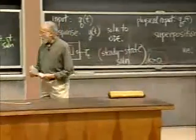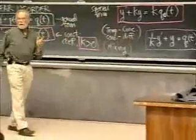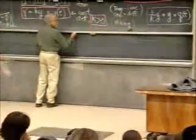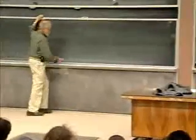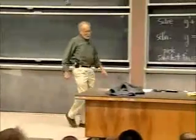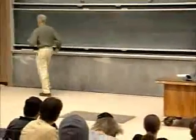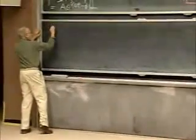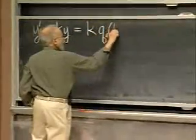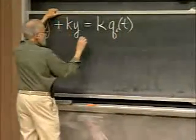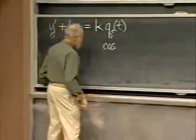Now, today what I wanted to discuss is what's in the notes I gave you today, which is: what happens when the physical input is trigonometric? For certain reasons, that's the most important case there is. It's because of the existence of what are called Fourier series — that's something we'll be studying in about three weeks or so. So I want the physical input. I'm going to take the equation in the form y' + ky = k·Q_e(t), and the input I'm interested in is cosine(ωt).